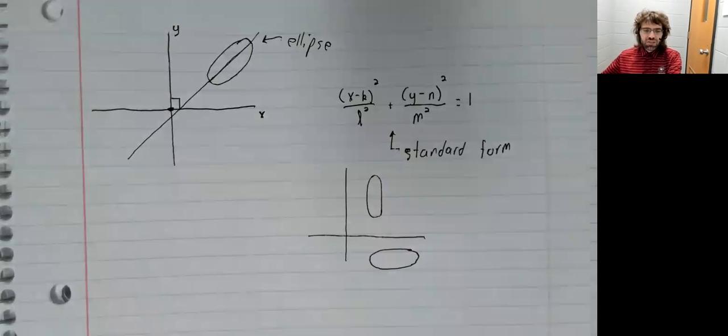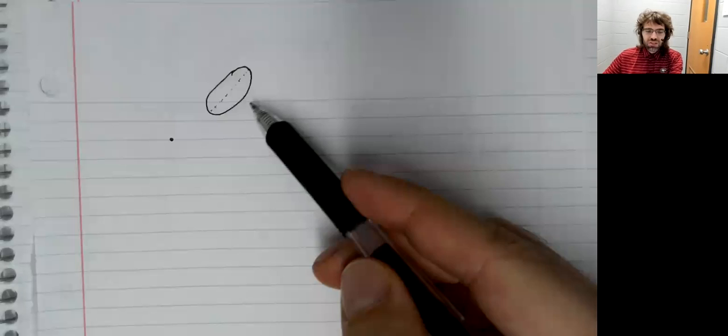If we erase the x and the y-axis, we still have the ellipse that we're interested in studying. And we still have the origin telling us where this ellipse is on the Cartesian plane.